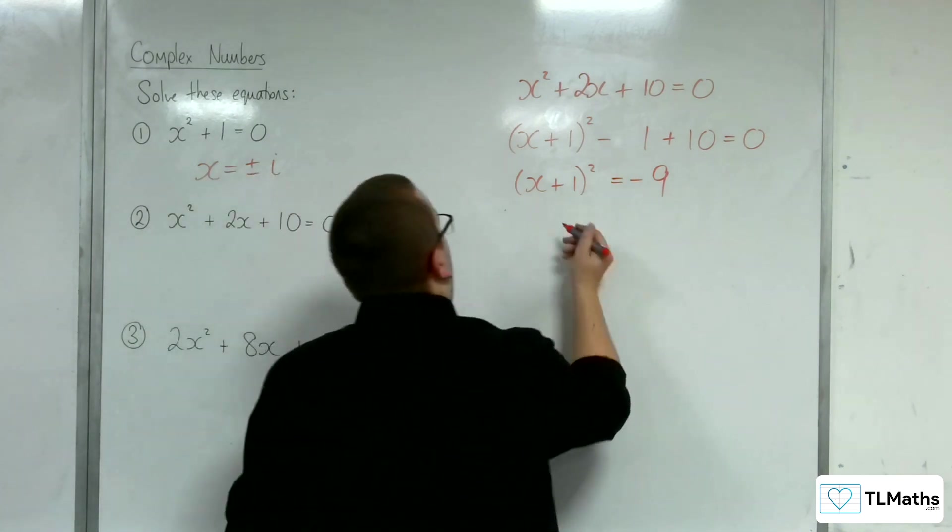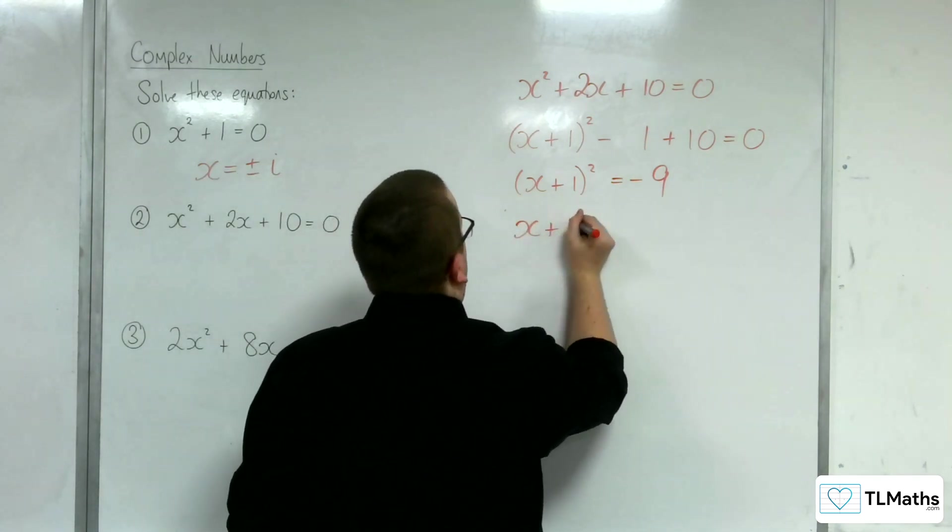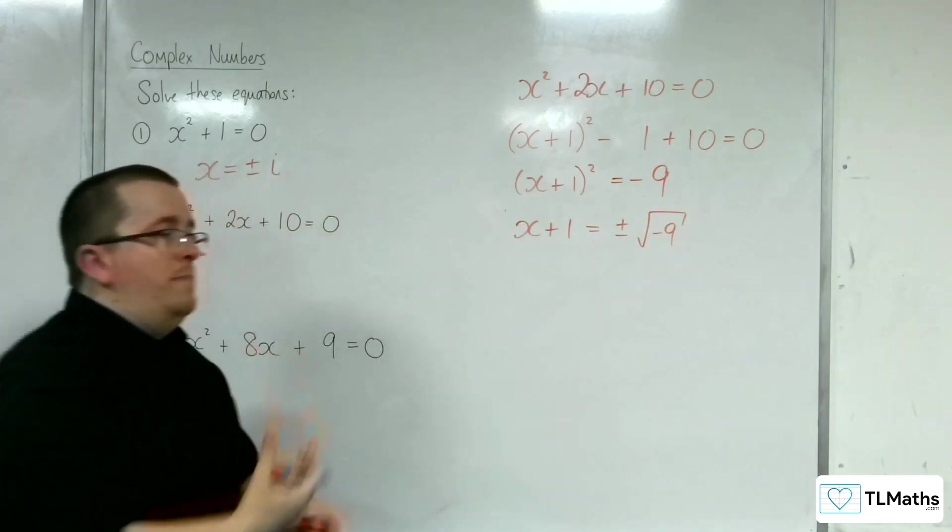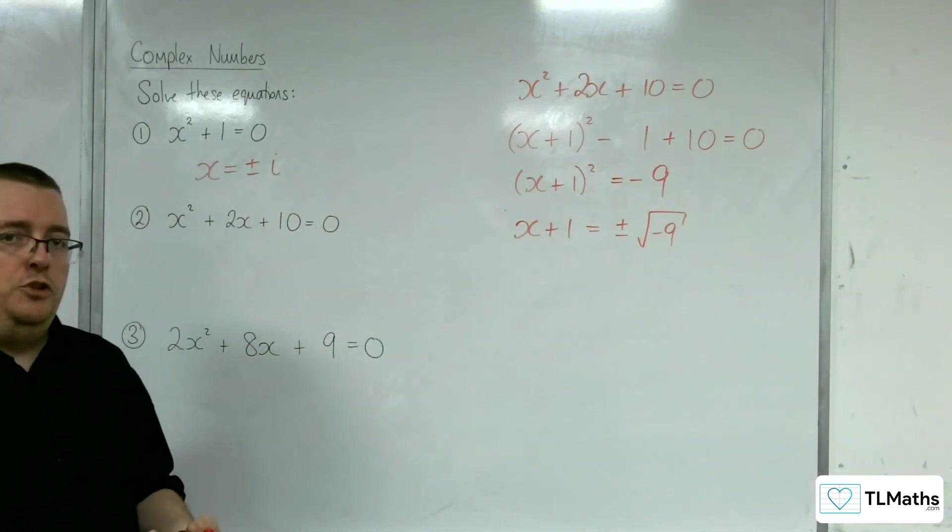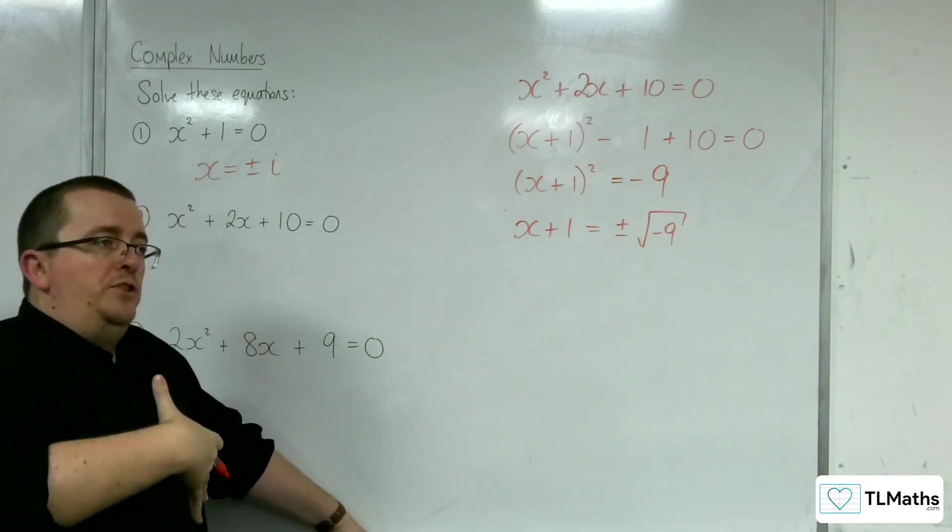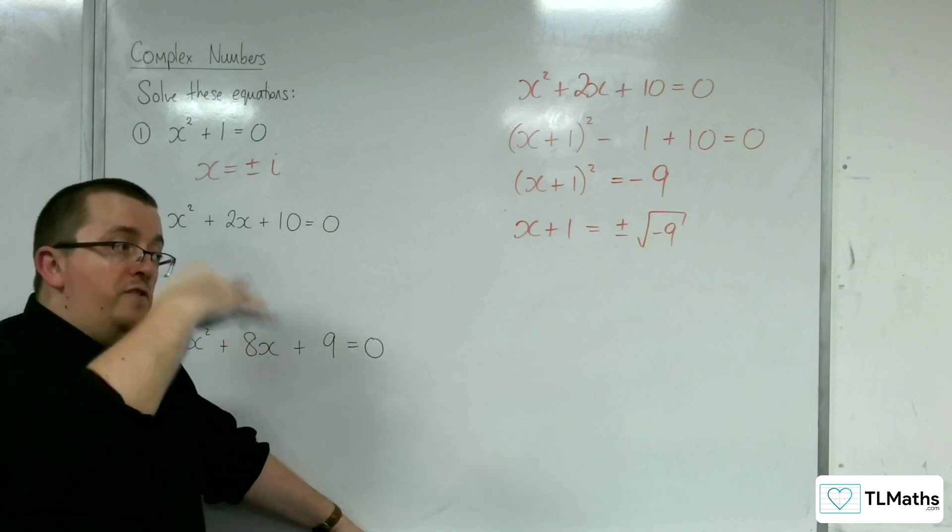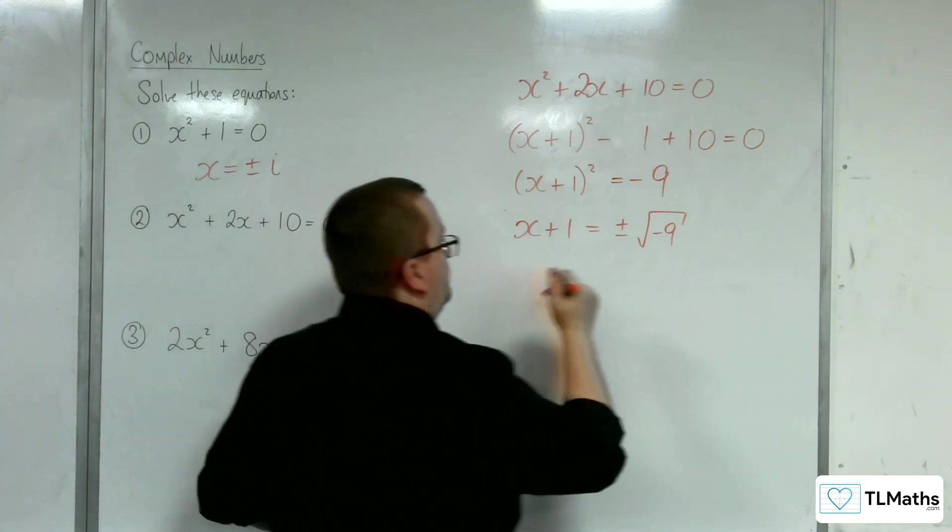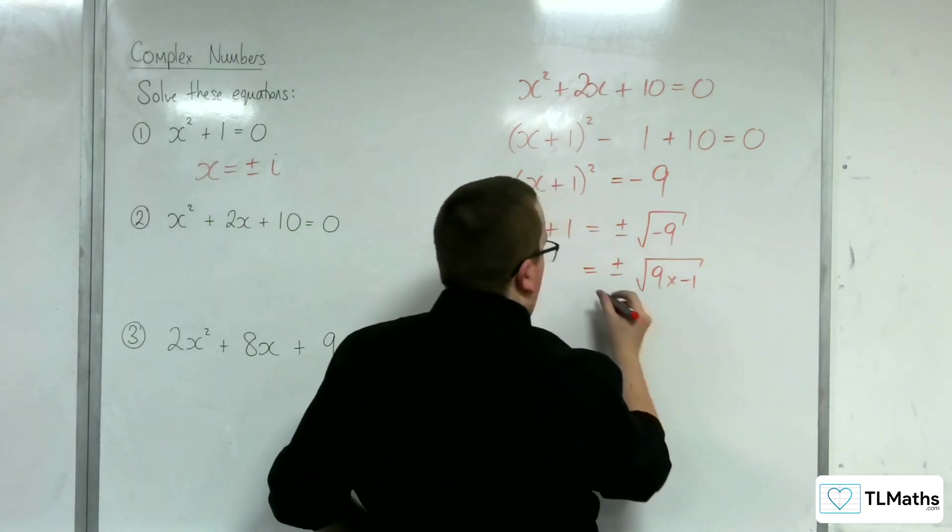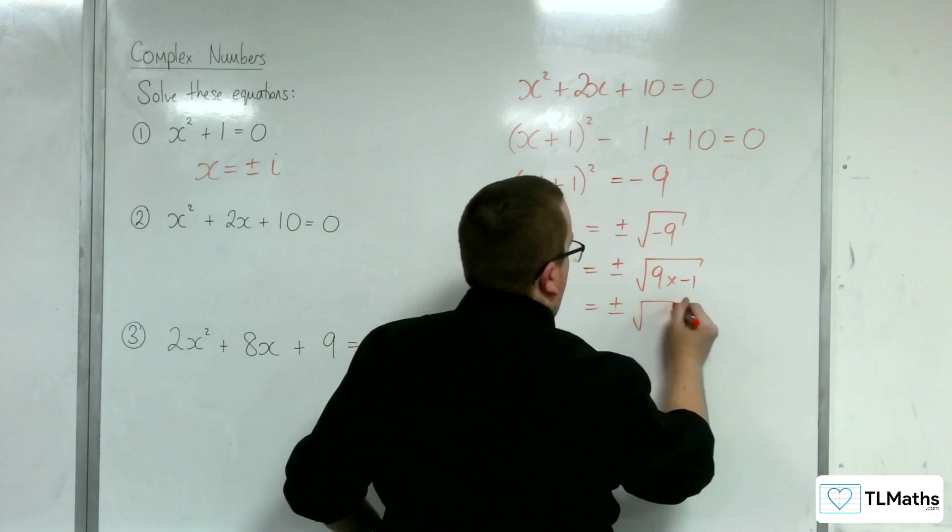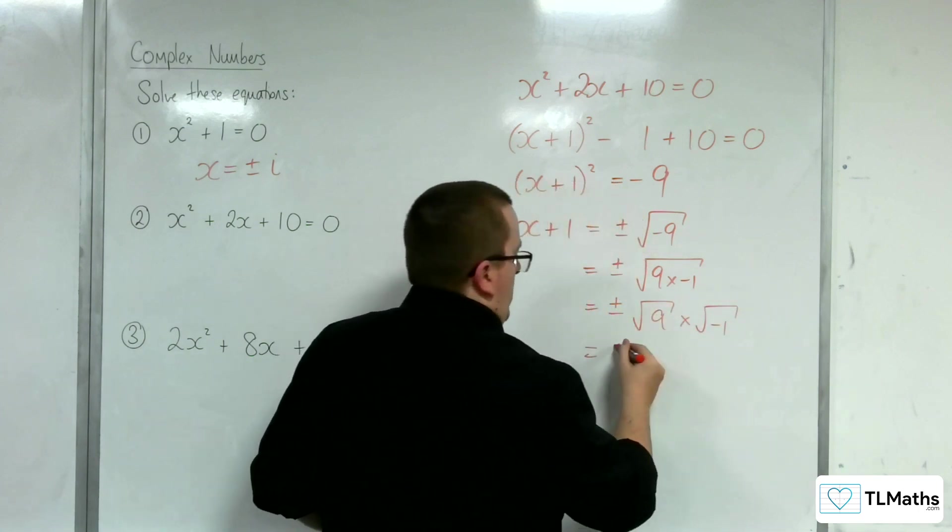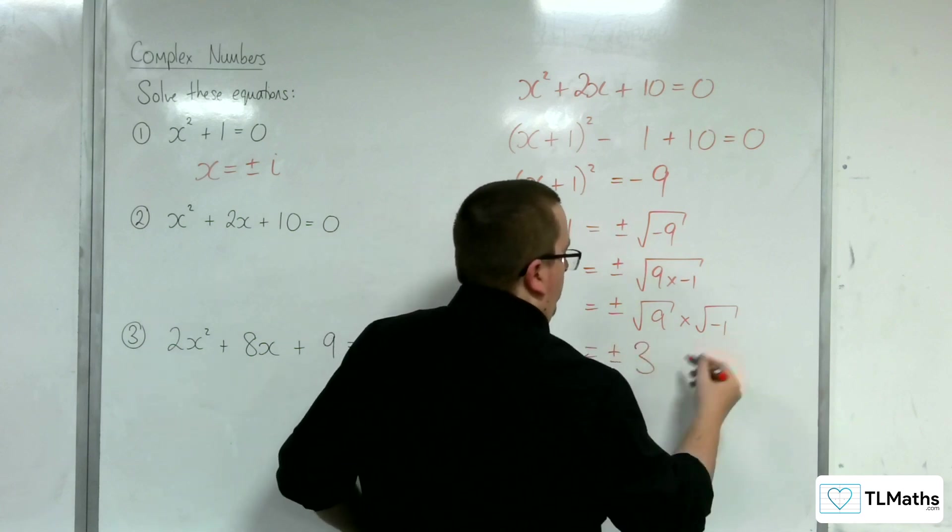Now, we're going to square root both sides here. So, we get the plus or minus the square root of negative 9. Now, remember, using your indices knowledge, you can then write that as square root of 9 times minus 1. You can split that apart. Square root of 9 is just 3. And square root of minus 1 is i.